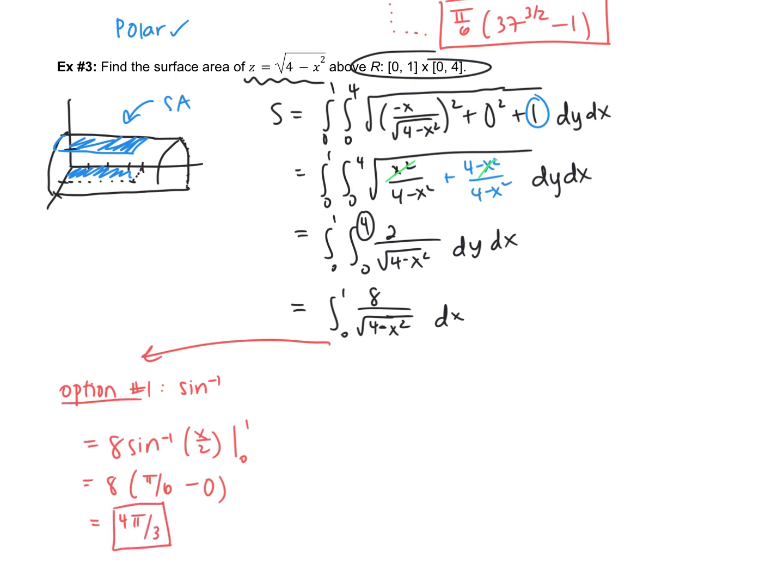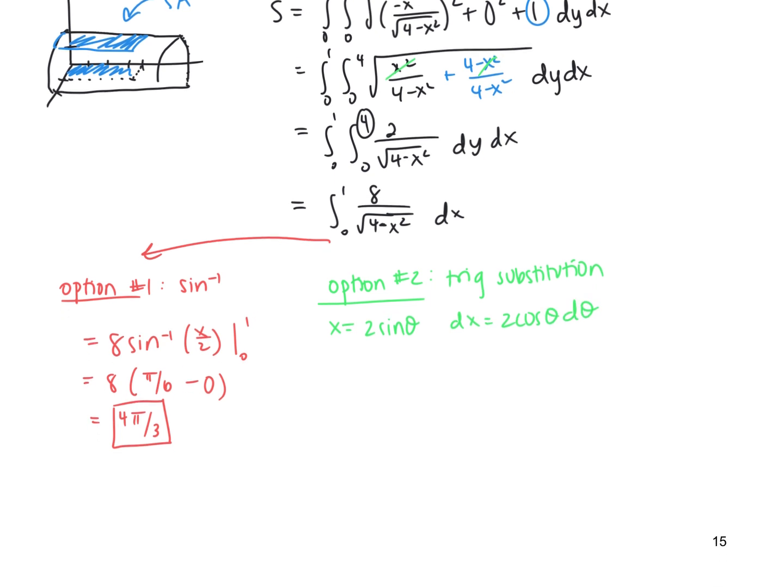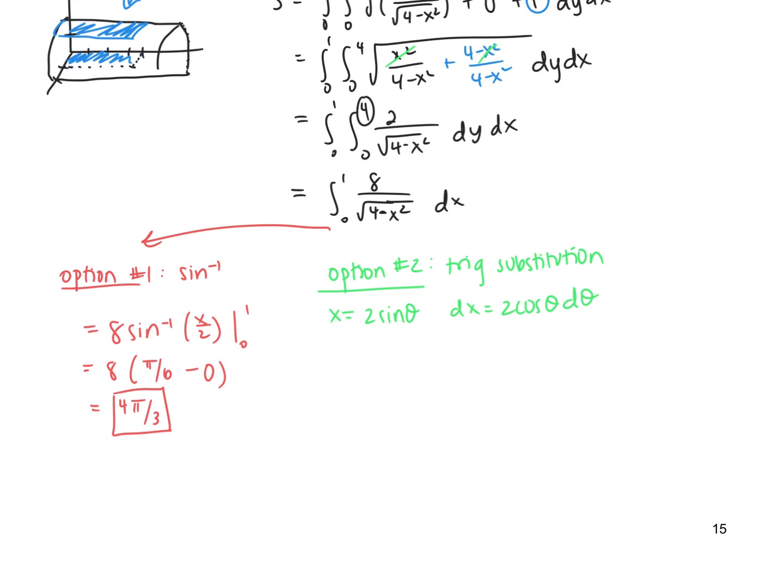Now, some of you may have that remembered, and that's great. Many of you, probably like me, don't remember that one. So option number 2 would be a trig substitution. We're also going to go through that one. I'm going to let x be 2sin(θ), which means dx, then, is 2cos(θ)dθ.